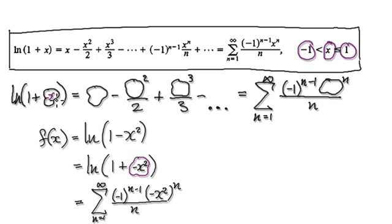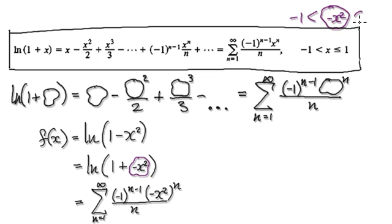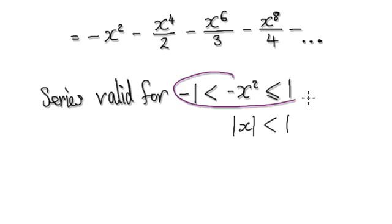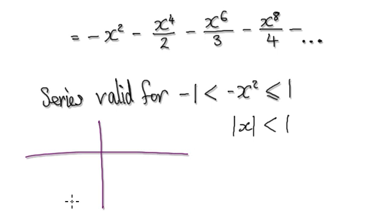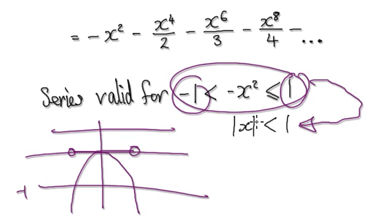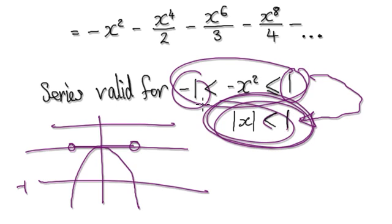But don't forget our bubble here is negative x squared. So the series is valid when negative x squared satisfies that condition. Drawing a graph of y equals negative x squared and checking where it falls between negative 1 and 1, this translates to the absolute value of x less than 1. So it's valid when this is true.